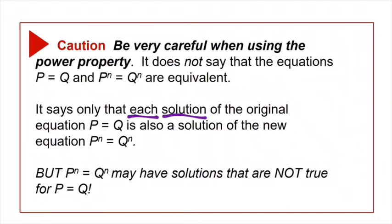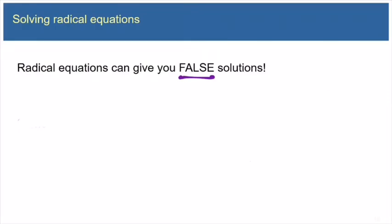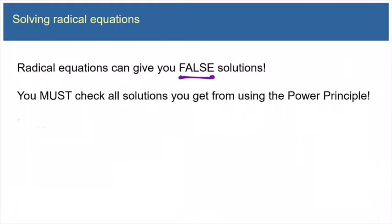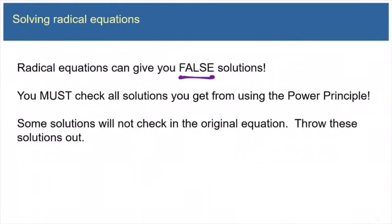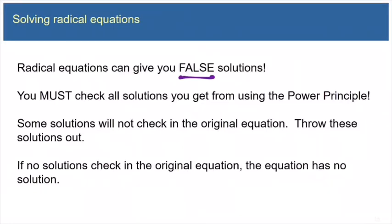The bad news is that the new equation may very well have solutions that are not solutions for the original equation. In other words, the process of squaring both sides of the equation can introduce false solutions, or what we sometimes call extraneous solutions. So when you use the power property to square both sides of an equation, that can introduce false solutions. And any solution that doesn't check in the original has to be thrown out. If none of the solutions check in the original equation, then that equation just has no solution.